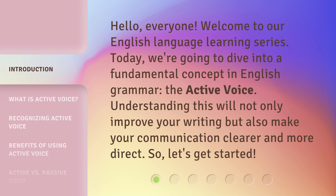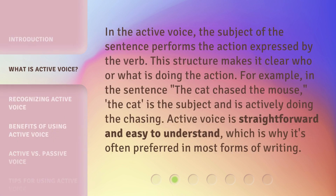Let's get started. In the active voice, the subject of the sentence performs the action expressed by the verb. This structure makes it clear who or what is doing the action. For example, in the sentence 'the cat chased the mouse,' the cat is the subject and is actively doing the chasing.